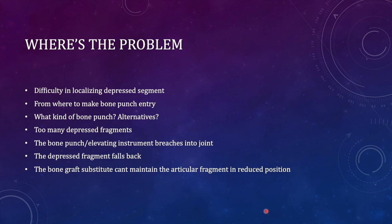Often the devices are limited and residents are not sure which bone punch to use, and sometimes they don't have the bone punch at all in a limited resource setup. Sometimes the depressed fragments are too many to be elevated and it is very difficult to identify each one. The bone punch often enters into the joint while elevating the depressed fragment, which complicates the reduction further.